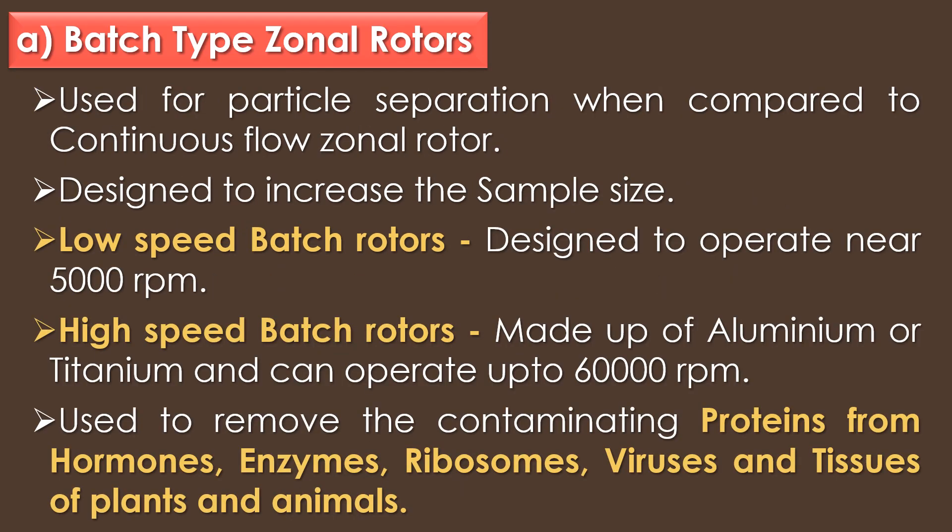The first type of zonal rotor is the batch type zonal rotor. Batch type zonal rotors are extensively used for particle separation compared to continuous flow zonal rotors, and are designed to increase the sample size. Low speed batch rotors are designed to operate near 5000 rpm, while high speed rotors are made up of aluminium or titanium and can operate up to 6000 rpm. Batch type zonal rotors are used to remove contaminating proteins from hormones, enzymes, ribosomes, viruses, and tissues of plants and animals.